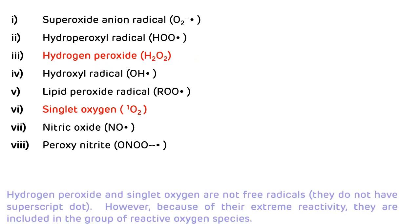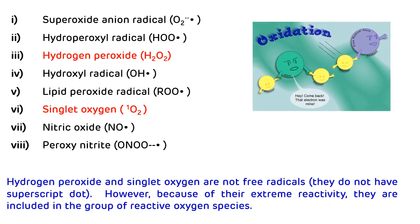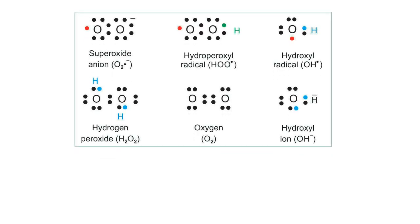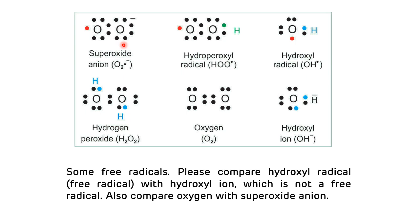Among all reactive oxygen species, hydrogen peroxide is the weakest. This picture shows some free radicals — superoxide anion, hydroperoxide radical, and hydroxyl radical. Hydrogen peroxide and oxygen are not examples of free radicals. The superoxide anion is the precursor of all oxygen-related reactive oxygen species, and hydroxyl radical is the strongest free radical while hydrogen peroxide is the weakest ROS.